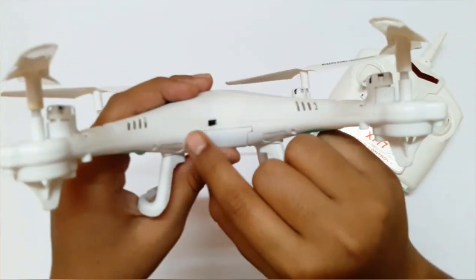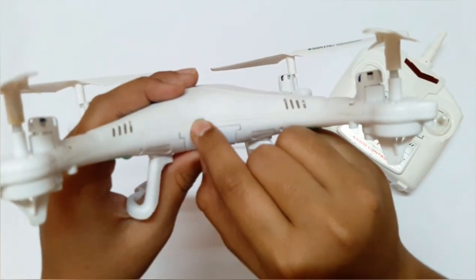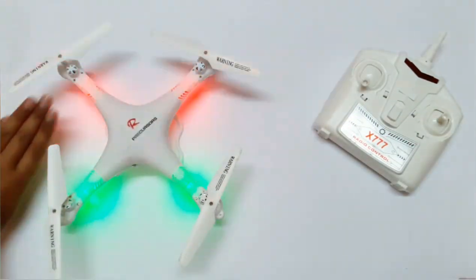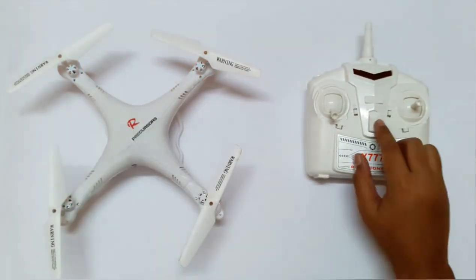Now the drone is ready for being tested. Turn on the drone. This is the on-off button. Lights appear.